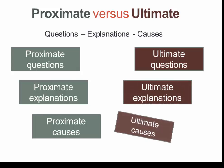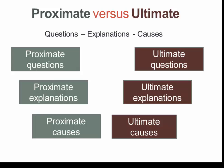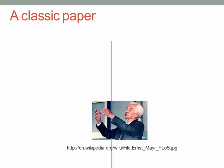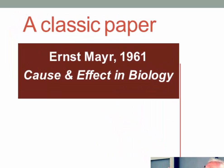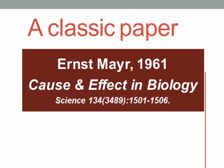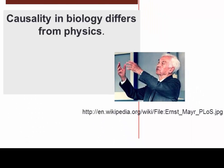We can talk about proximate questions, proximate explanations, and proximate causes, and similarly we can talk about ultimate questions, ultimate explanations, or answers based on ultimate causes. This distinction in evolutionary biology goes back to a paper written by Ernst Mayr in 1961 called 'Cause and Effect in Biology,' which introduces the terms ultimate and proximate. The paper's focus is to explain how causality in biology differs from physics.